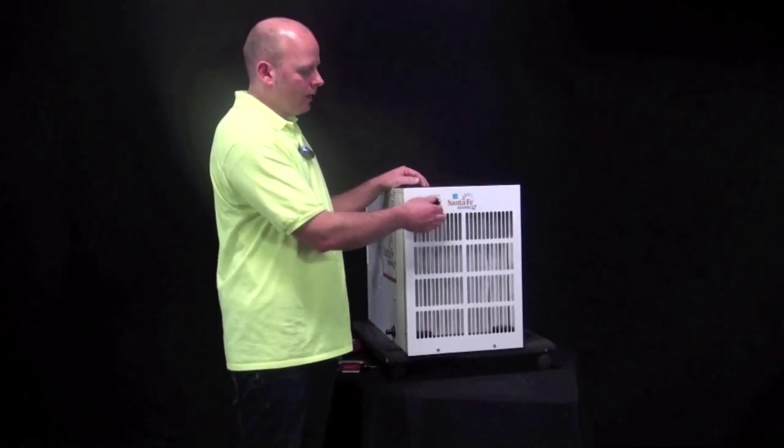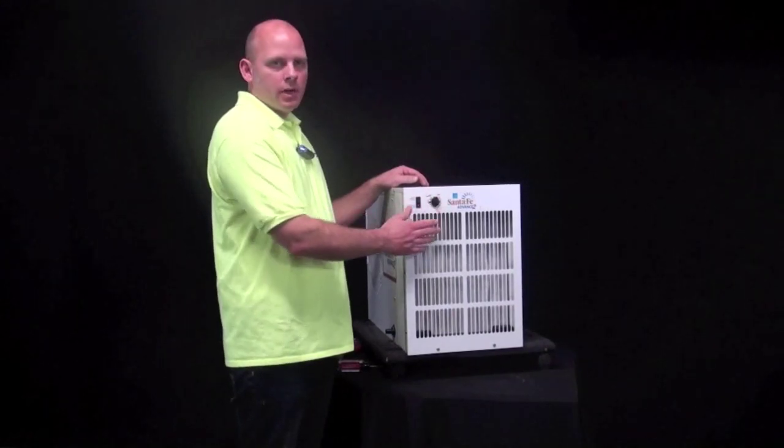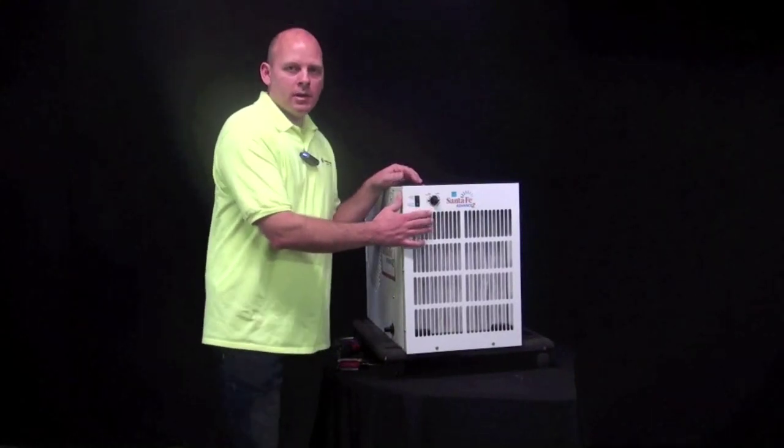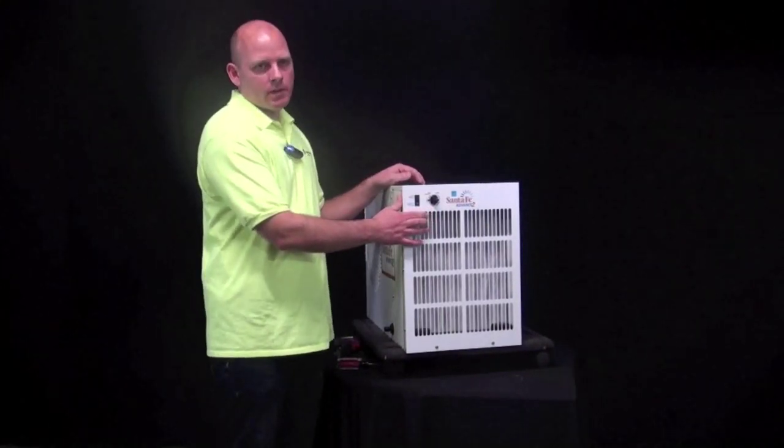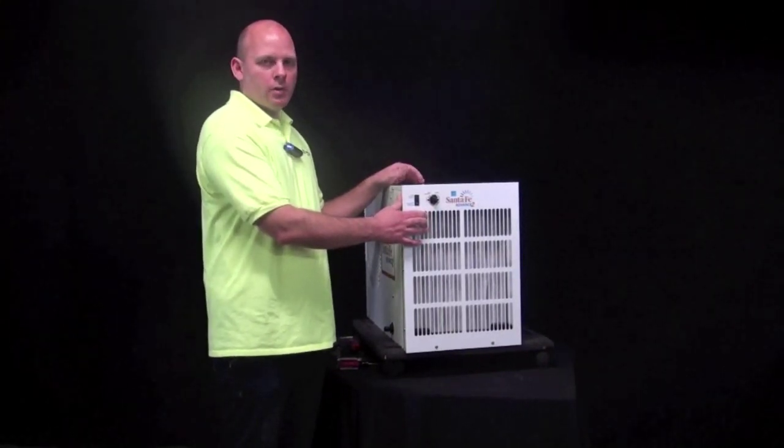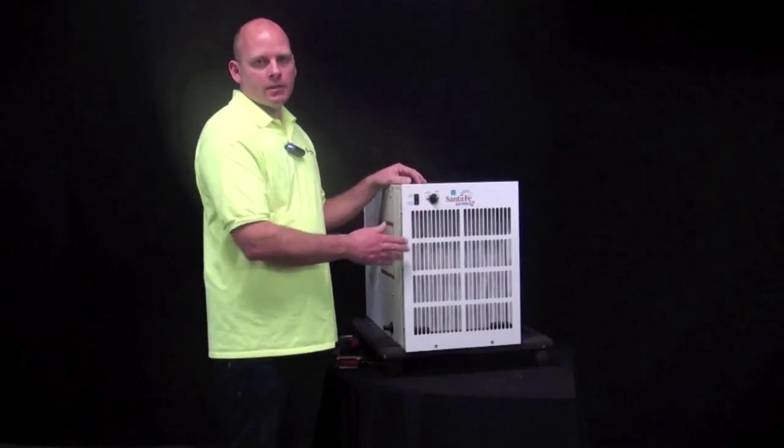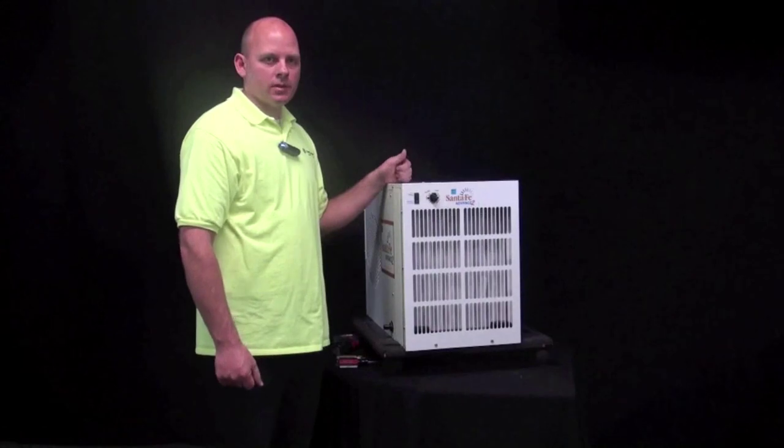Or if the unit is running and say you have it set at 50% but yet the humidity level in your crawl space is below that, say 30%, then that would be a good indication that the dehumidistat is faulty.